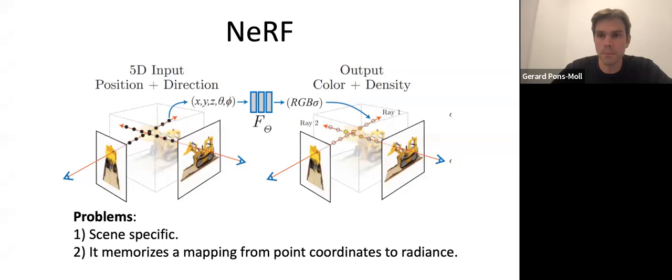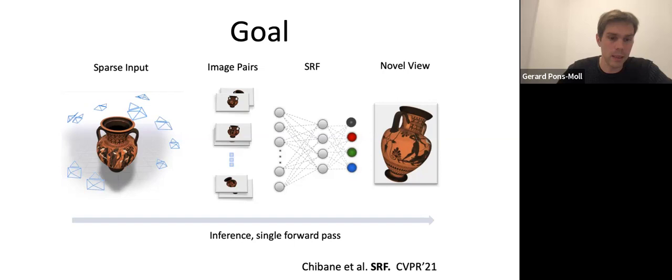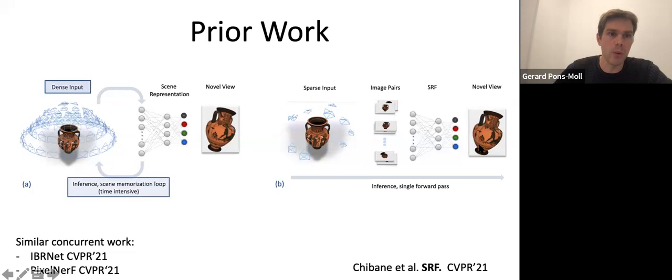Our goal here was, given sparse inputs — not dense inputs but even sparse inputs — to have a network that in a single forward pass could produce novel views for a novel scene. We don't want to overfit to a given scene, we want to generalize to new scenes. So essentially: before we had dense input, a single scene, and optimization to obtain a scene representation. Now we want sparse input — making the problem harder — and also generalization to new scenes. These are the two key changes.